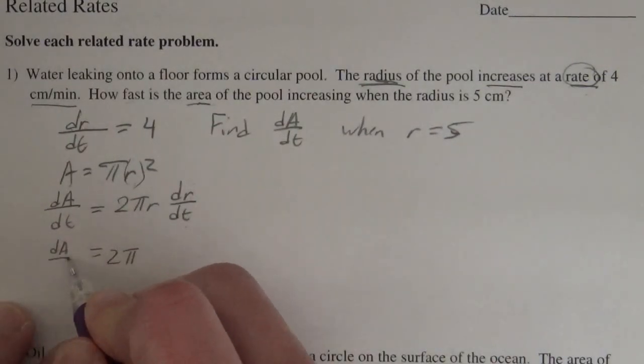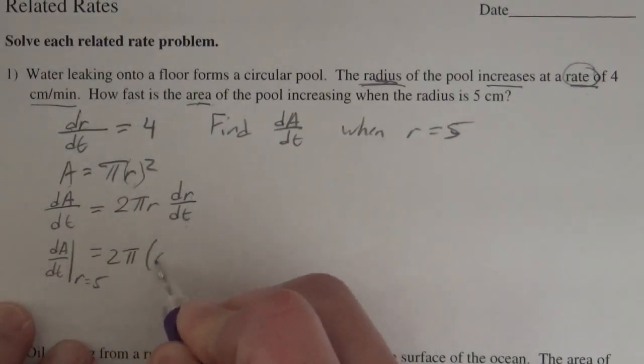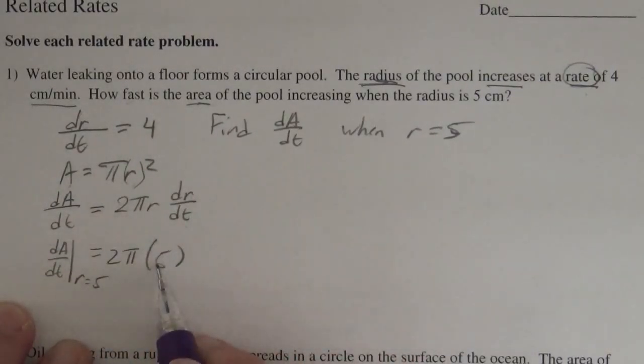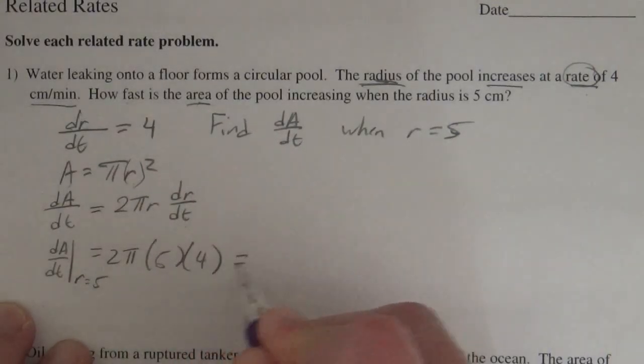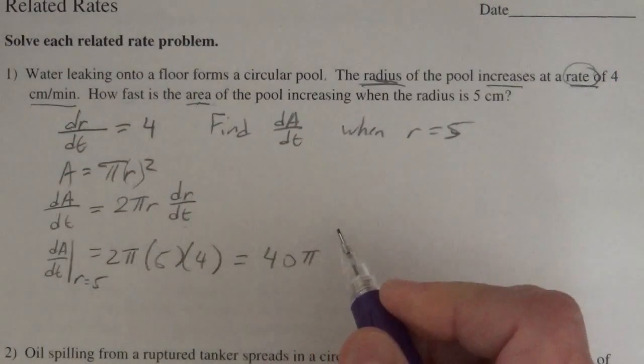The way they notated it is dA/dt when r is 5, and you just plug in at that time the radius is 5, and dr/dt they told us was 4, and it's looking like this is going to be 40π.